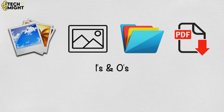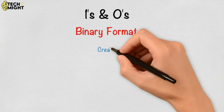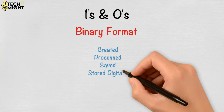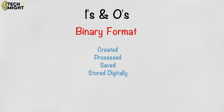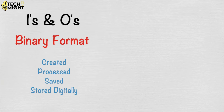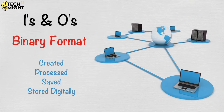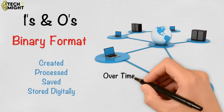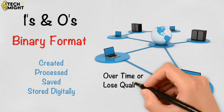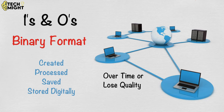At its most rudimentary level, computer data is a bunch of ones and zeros, known as binary data. Because all computer data is in binary format, it can be created, processed, saved, and stored digitally. This allows data to be transferred from one computer to another using a network connection or various media devices. It also does not deteriorate over time or lose quality after being used multiple times.